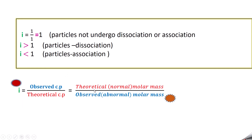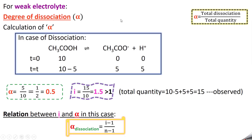This is very important for solving problems. I = observed colligative property / theoretical colligative property, which also equals theoretical molar mass / observed molar mass. This is the case with complete dissociation like sodium chloride. For weak electrolytes that partially dissociate, we introduce another term: the degree of dissociation, α, which represents how far a substance gets dissociated or associated.